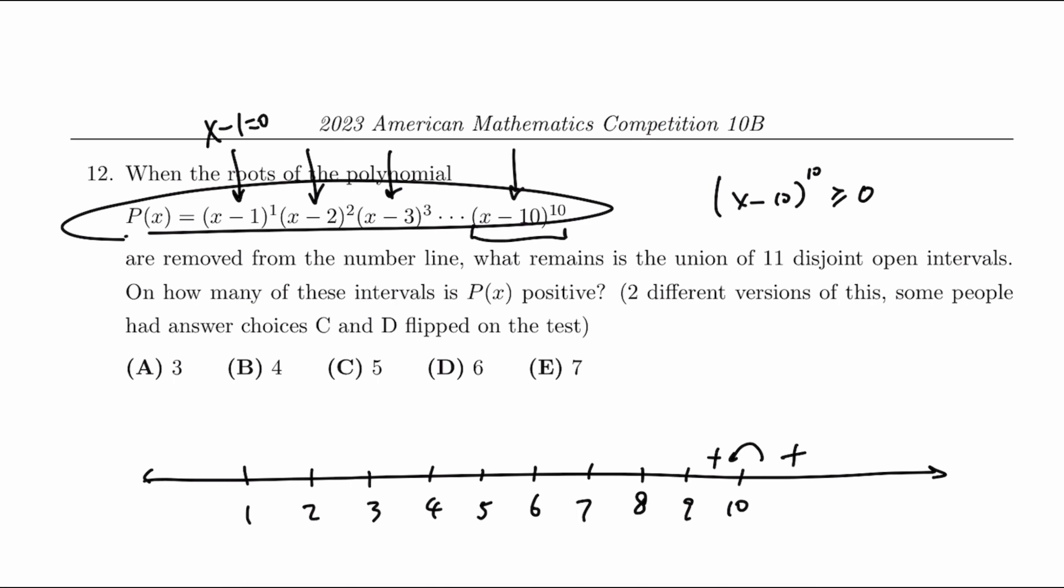However, if we are on an odd power, X minus 9 to the 9th power for example, we are going to have to switch its sign because 8 minus 9 to the power of 9 is going to be negative. Anything less than 9, that term will be negative. So every time we have that, we will have to flip the power.